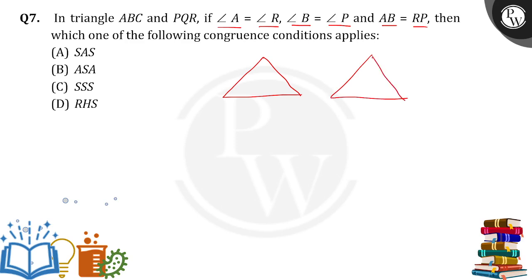Angle A is equal to angle R, so A here is R. Next, angle B is equal to angle P. Then of course the remaining vertex will be Q, and it was given that AB is equal to RP.